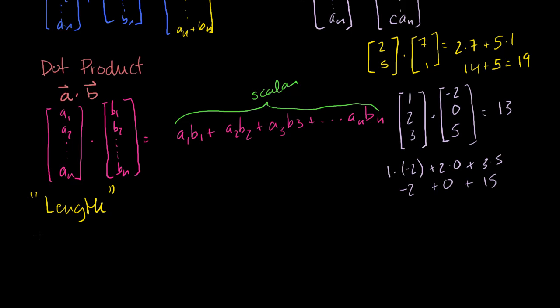So if I take the length of a, and the notation we use is just these double lines around the vector, the length of my vector a is equal to—and this is a definition—it equals the square root of each of the terms, each of my components squared added up: a1 squared plus a2 squared, plus all the way to plus an squared.